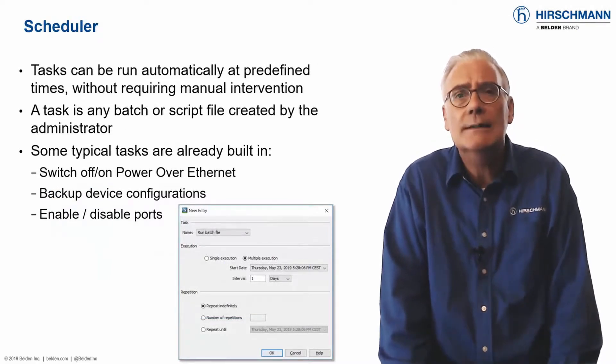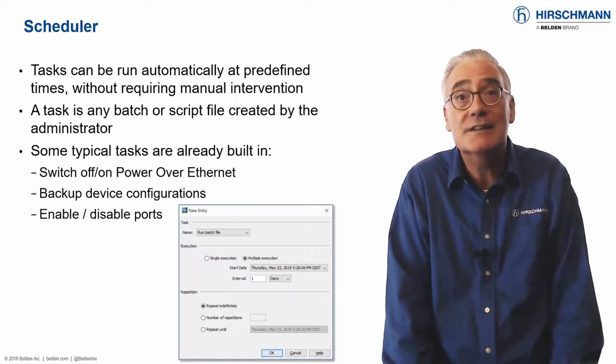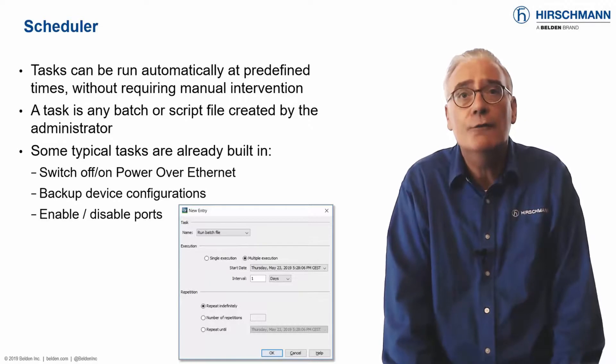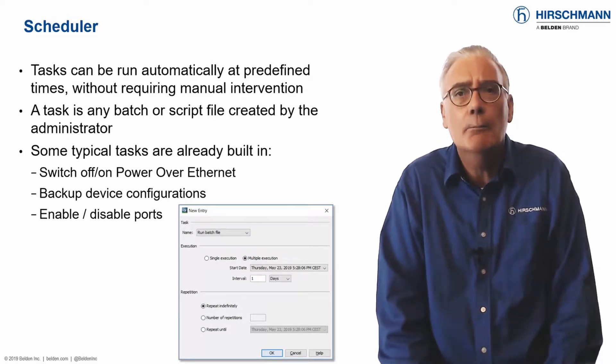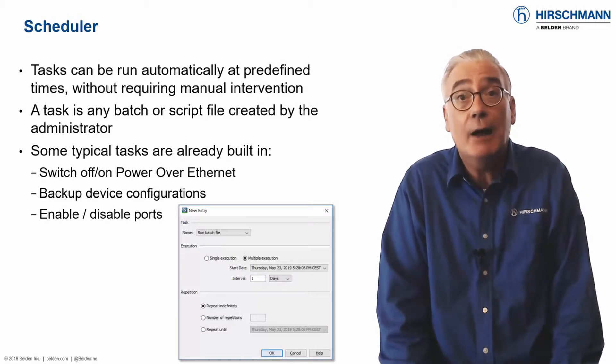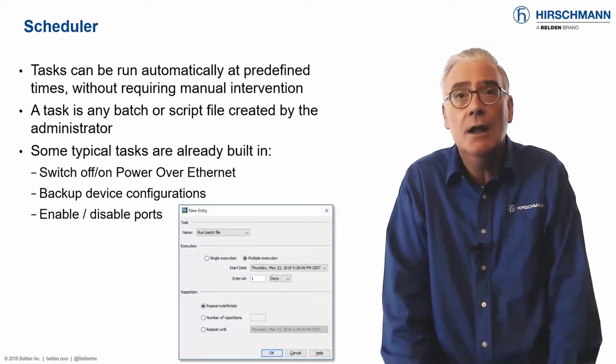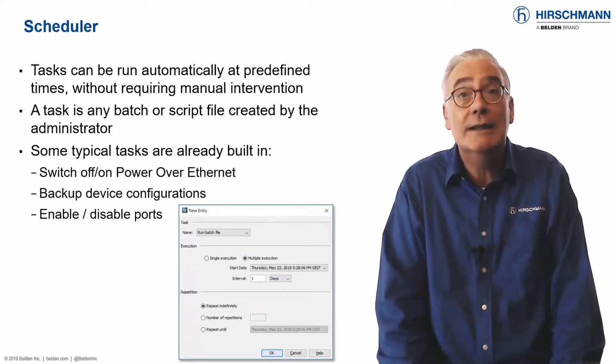In every network some tasks need to be repeated. This is usually not the most interesting work, but it's often critical to the smooth running of the network. A scheduler takes the pressure off you by automatically running tasks at predefined times. Some tasks like backing up switch configurations, or disabling power over Ethernet outside production hours, are so common that we've built them into Industrial HiVision.